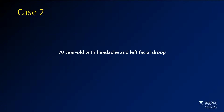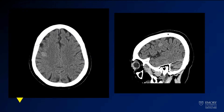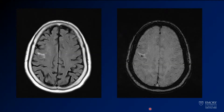Hemorrhage case 2 is a 70-year-old with headache and left facial droop. Here we have a couple of images from a head CT. We have an axial image on the left showing a little bit of a subtle hyperdensity here in the posterior aspect of the frontal lobe. Here on the sagittal reconstruction you see it there, kind of just above the sylvian fissure. You're concerned that that's a hemorrhage.